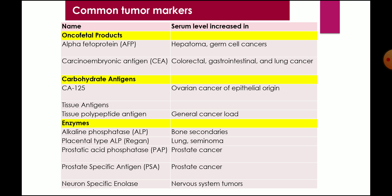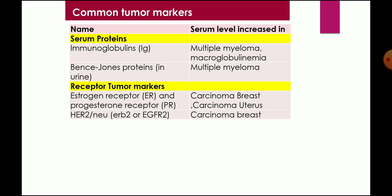There are also enzymes acting as tumor markers. Alkaline phosphatase is elevated in bone secondaries. Placental alkaline phosphatase — Regan isoenzyme — is elevated in lung cancer and seminoma. Prostatic acid phosphatase is elevated in prostatic cancer. Prostatic specific antigen (PSA) is elevated in prostate cancer. Neuron-specific enolase is elevated in nervous system tumors. Some serum proteins also act as tumor markers: immunoglobulins are elevated in multiple myeloma, and Bence Jones proteins in urine are also seen in multiple myeloma.